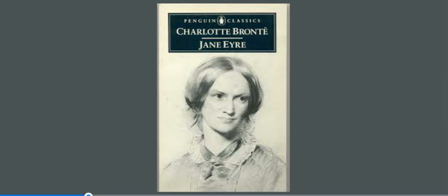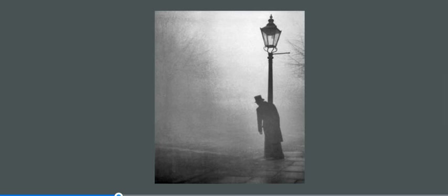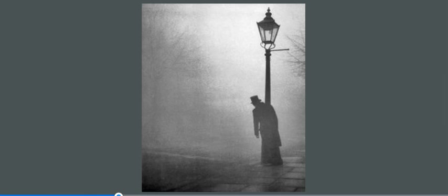We learn in the Lowood chapters that the Victorians believed in the miasma theory — basically the belief that diseases such as typhus were caused by bad air in the form of fog and mist. At Lowood, Jane states that the warm temperatures combined with the school's unhealthy location to create a breeding ground for typhus, and the Victorians were in fact unaware that typhus is spread by body lice and dirty conditions.